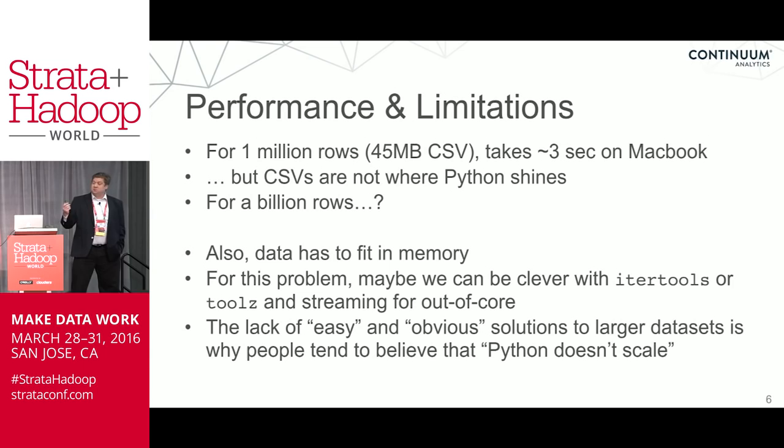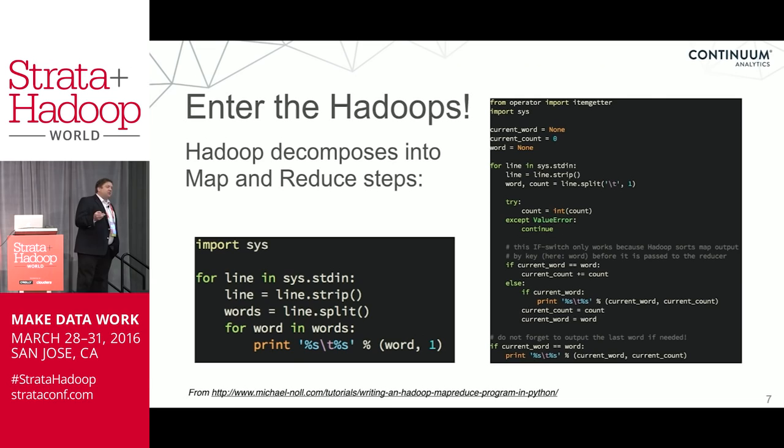This lack of easy and obvious solutions to larger data sets is why some people believe that Python doesn't scale — the nice and easy solutions don't actually work at scale. So Hadoop enters and you split it up. There are various execution frameworks for the MapReduce framework. You can certainly apply Python as the map and Python as a reduce, and people have done that. But it gets a little less Pythonic — a little more imperative, less exciting, more code, harder to read and understand.